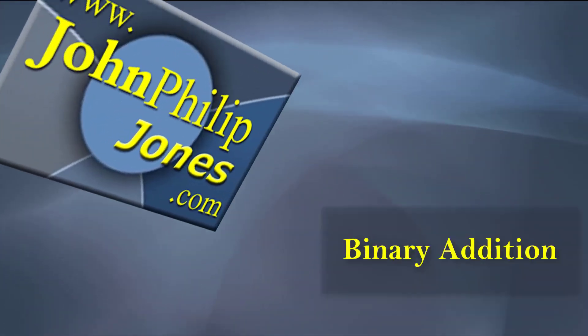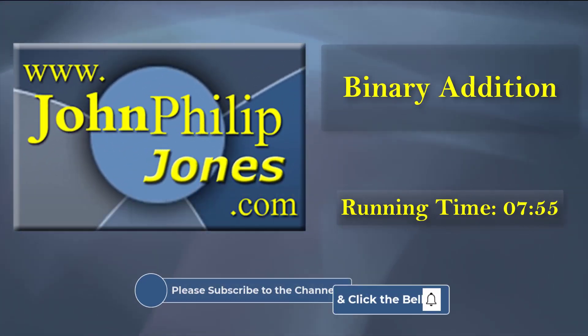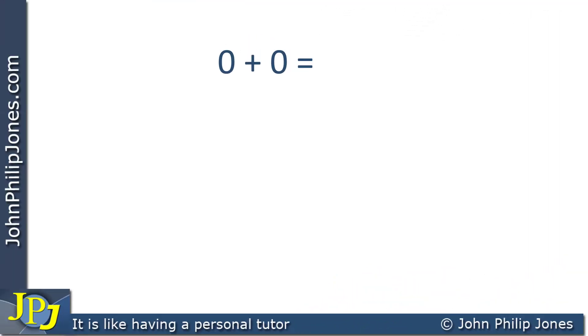In this video, I'm going to take a look at binary addition. The only figures you will see in a binary number are a 1 and a 0. In front of you, you can see I've got two 0s, and when they're added up, they will give us the value of 0.